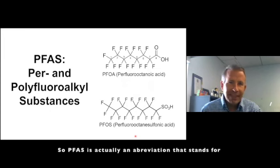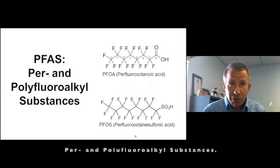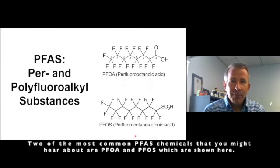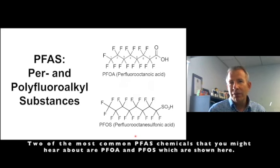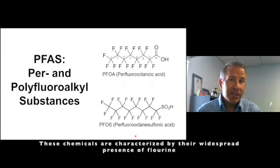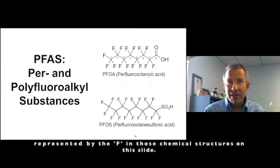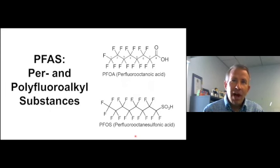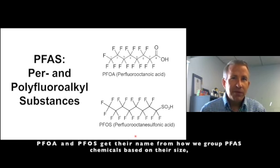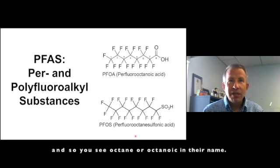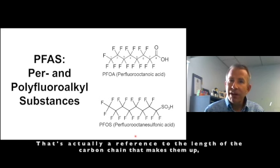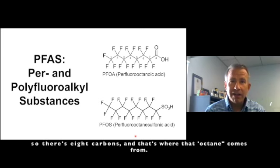PFAS is actually an abbreviation that stands for per- and polyfluoroalkyl substances. Two of the most common PFAS chemicals that you might hear about are PFOA and PFOS, which are shown here. These chemicals are characterized by their widespread presence of fluorine, represented by the F in those chemical structures on this slide. PFOA and PFOS get their name from how we group PFAS chemicals based on their size — you see 'octane' or 'octanoic' in their name, which is a reference to the length of the carbon chain that makes them up — there are eight carbons, and that's where 'octane' comes from.